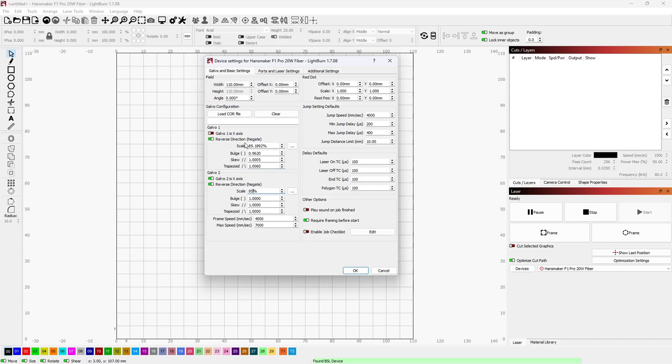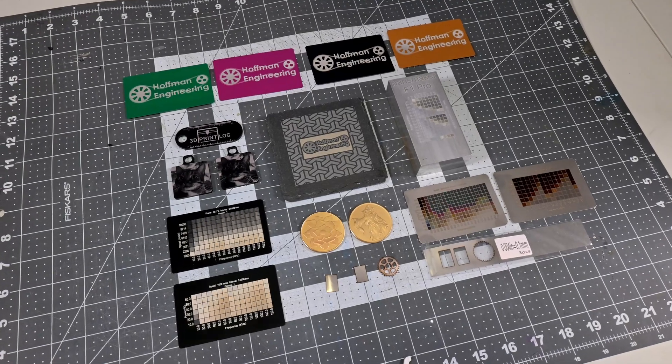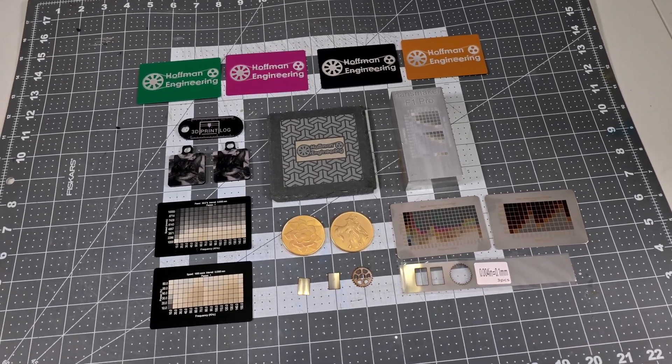And Lightburn has some great features, like the 3D slice mode, which makes deep engraving 2.5D designs a breeze. So with all of the specs out of the way, let's take a look at how well the F1 Pro cuts and engraves.